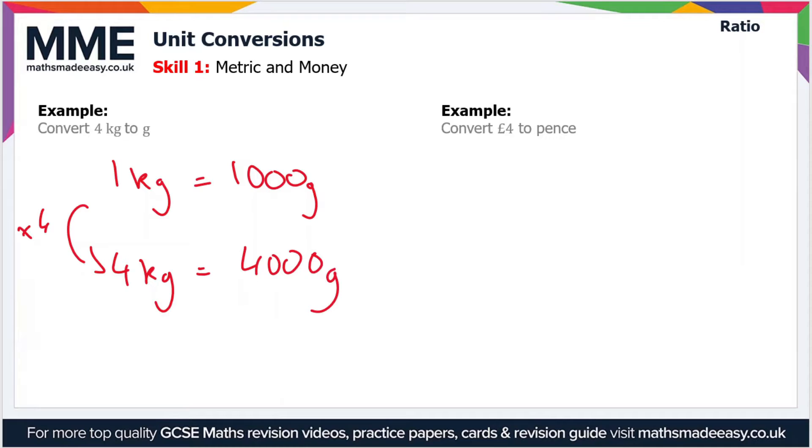Moving on to the second example, we have to convert 4 pounds to pence. The conversion you'll need is 1 pound is 100 pence, which I'm sure you already know. So then 4 pounds—we just multiply everything by 4—and that gives us 400 pence. Nice and straightforward.